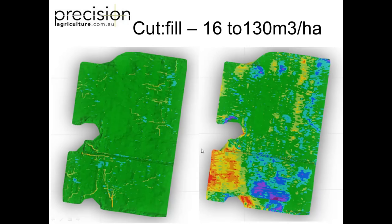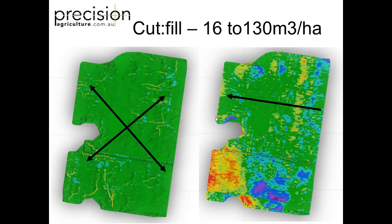OptiSurface can produce cup-fill maps as an output. The image on the left is a 4D design — no wheel tracks, just letting water run any direction out of the field — and the cup fill there was 16 cubic metres per hectare, so very low earth movement to drain naturally. Because we have wheel tracks and need water to run east-west, the cup fill becomes 130 cubic metres per hectare — a fairly big increase. With wheel tracks you need to make sure those run properly. It's still a lot less than traditional land levelling, and it works with the natural surface of the ground. This very flat land has a natural slope of 0.04–0.05%, which is about the minimum we use to have drainage.